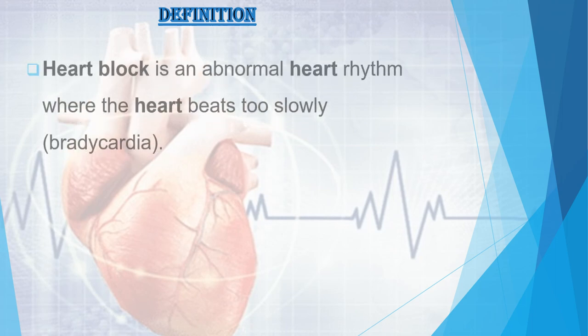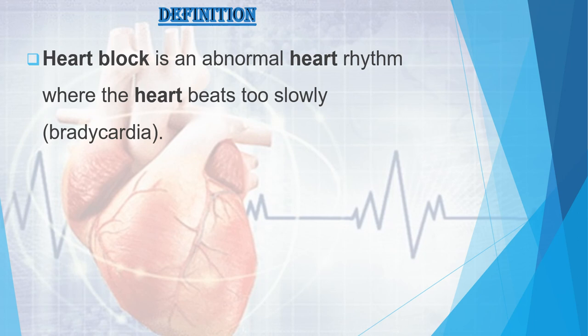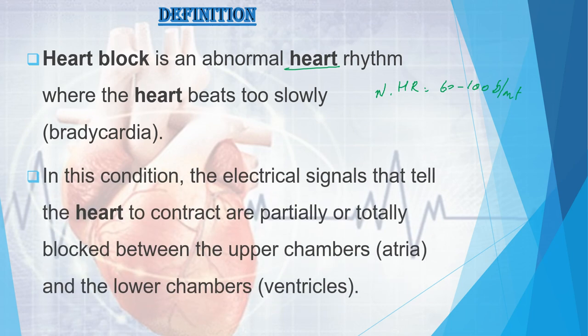So what is heart block? Heart block is an abnormal heart rhythm where the heart beats too slowly — that is bradycardia. In this condition, the electrical signals that tell the heart to contract are partially or totally blocked between the upper chambers (atria) and the lower chambers (ventricles). The normal heart rate is 60 to 100 beats per minute for adults.